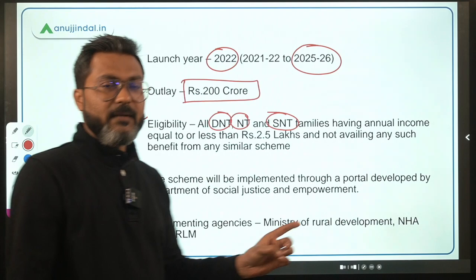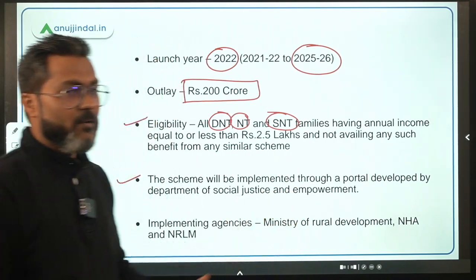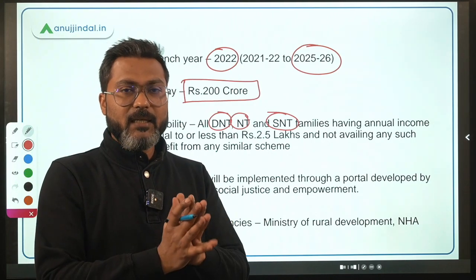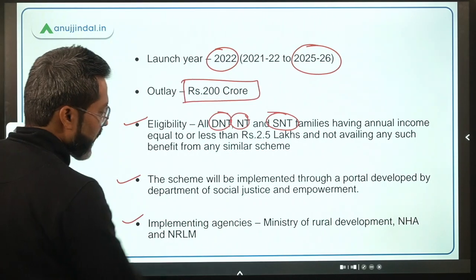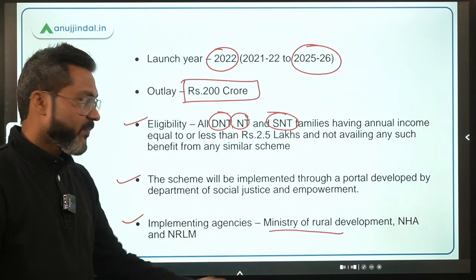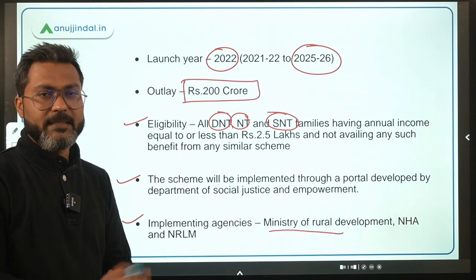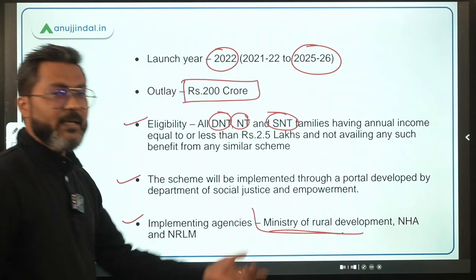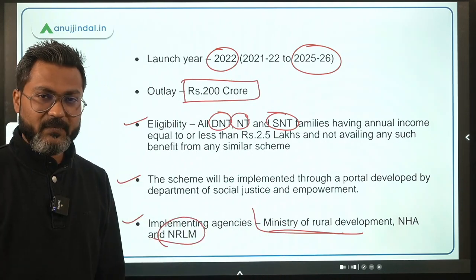The scheme will be implemented through a portal developed by the Department of Social Justice and Empowerment, through which all data will be collected and benefits provided to beneficiaries. It is being implemented by the Ministry of Social Justice and Empowerment in collaboration with the Ministry of Rural Development, National Health Authority, and National Rural Livelihood Mission.